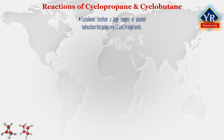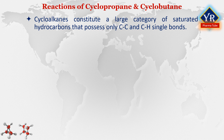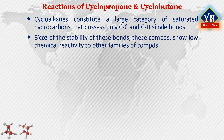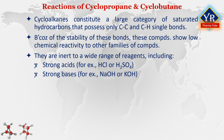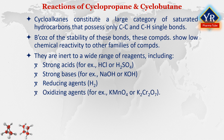As we have learned from the previous lesson, cycloalkanes constitute a large organic category of saturated hydrocarbons that possess only carbon-carbon and carbon-hydrogen single bonds. Because of the stability of these bonds, the saturated compounds show low chemical reactivity compared to other families of organic compounds. They are inert to a wide range of reagents, including strong acids such as hydrochloric acid or sulfuric acid, strong bases such as sodium hydroxide or potassium hydroxide, reducing agents such as hydrogen, and most oxidizing agents such as potassium permanganate or potassium dichromate. They undergo very few reactions.